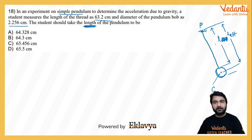So what is that length equal to? That length is length of thread L plus radius, right? So the value of L effective is what we're asked in this question. We are being asked what should be the length of pendulum, so that's the effective length.